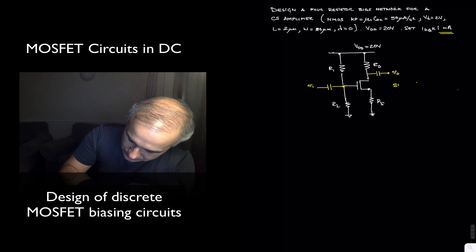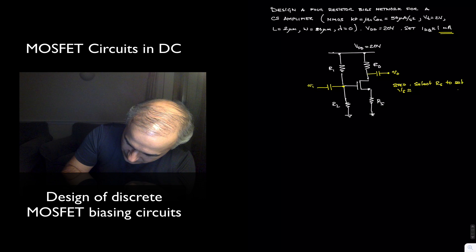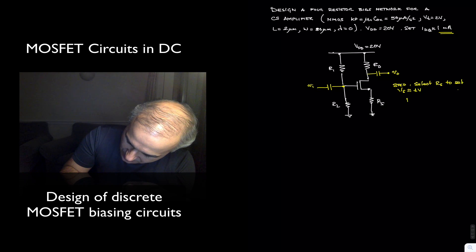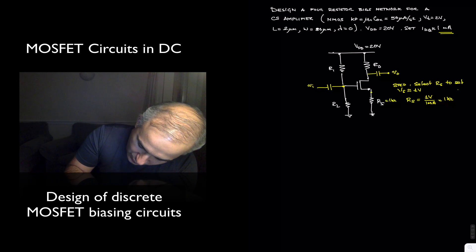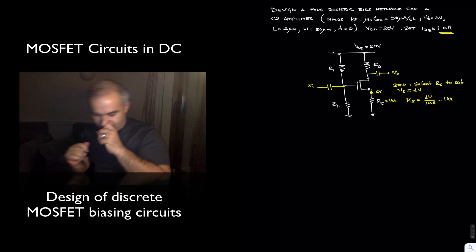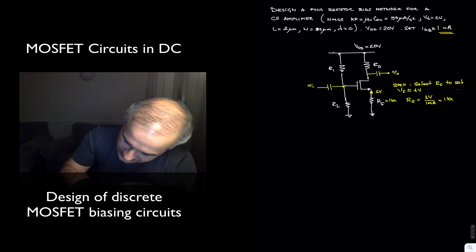Our step one is to select RS to set the source voltage approximately equal to 1 volt. And so we have RS is equal to 1 volt divided by 1 milliamp equals 1 kilo ohm. So we have 1 kilo ohm, which sets here the 1 volt and gives some feedback for stability. So this is our step one.